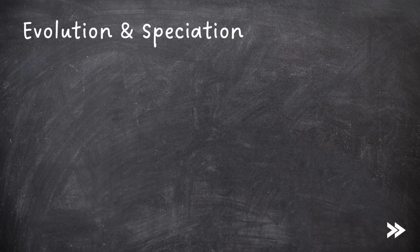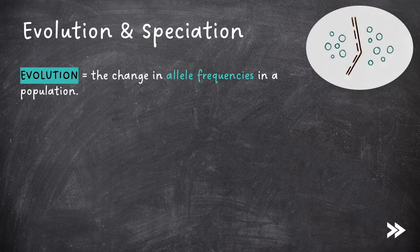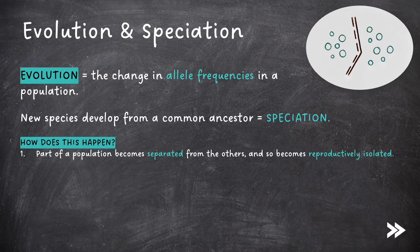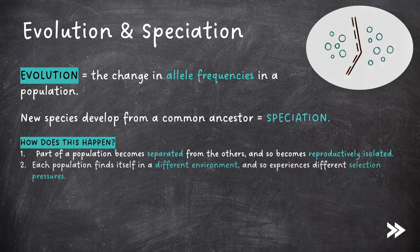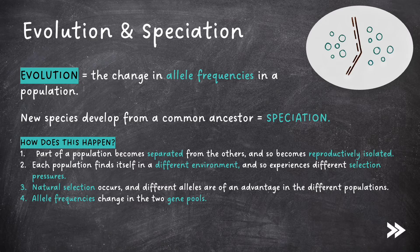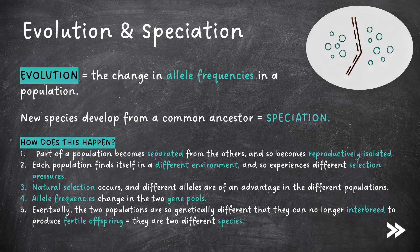Next, we need to know about evolution and speciation. We need to be able to define evolution as the change in allele frequencies in a population. New species develop from a common ancestor, which is a process known as speciation. How does speciation happen? First of all, part of a population becomes separated from the others, and so becomes reproductively isolated. Each population finds itself in a different environment, and so experiences different selection pressures. Natural selection occurs, and different alleles are of an advantage in the different populations. Allele frequencies change in the two gene pools. Eventually, the two populations are so genetically different that they can no longer interbreed to produce fertile offspring, and they are considered two different species.